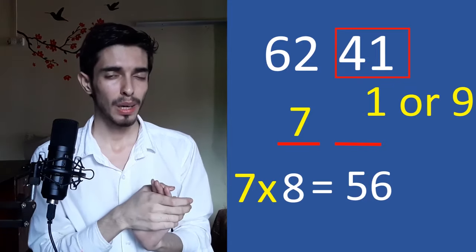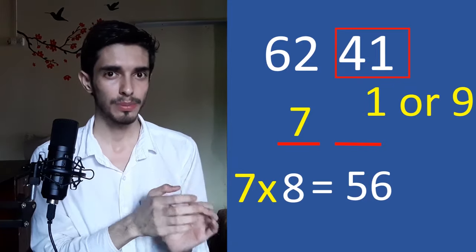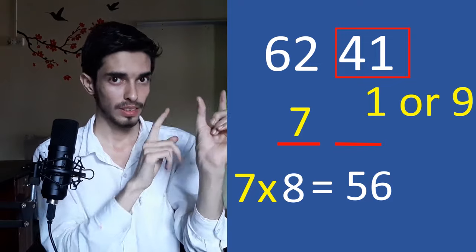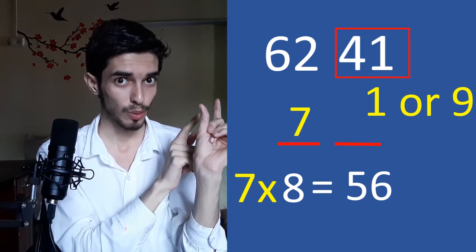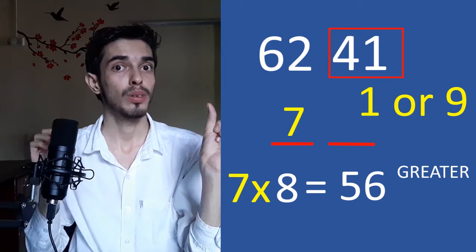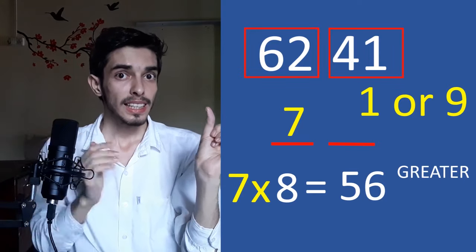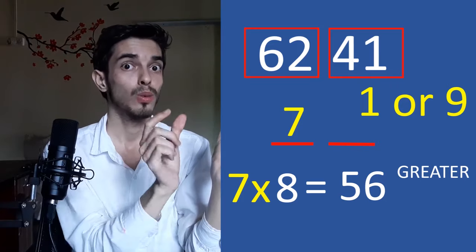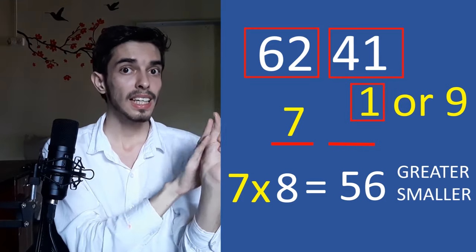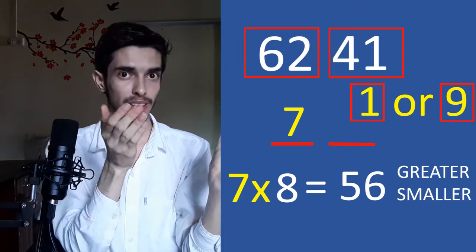Now, here comes a little tricky part. So, listen very very carefully. Now, if this number which is 56 we have got is greater than the first two digit of our question and here we have 62. Then, take the lower one which is 1 and if it is less than those two digits then take the higher one.